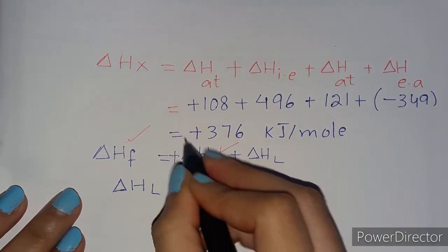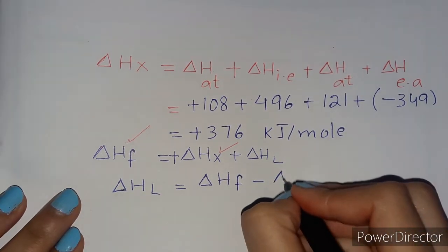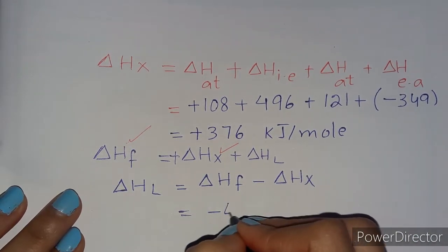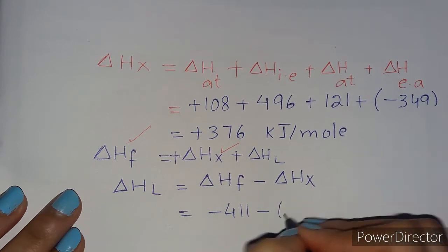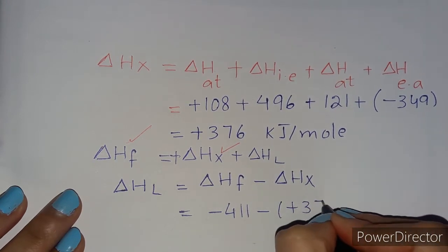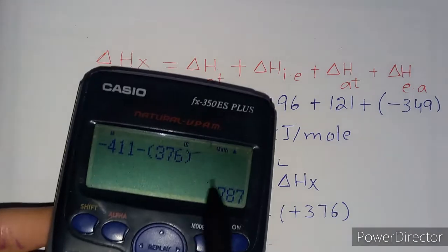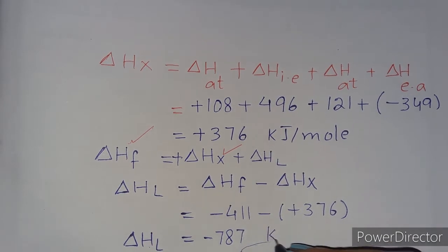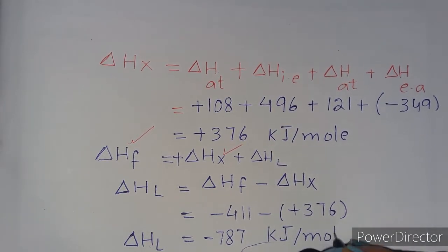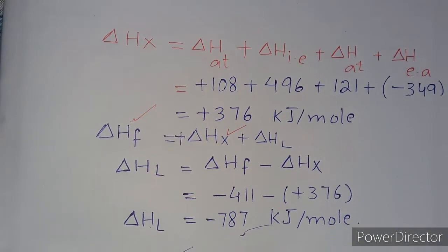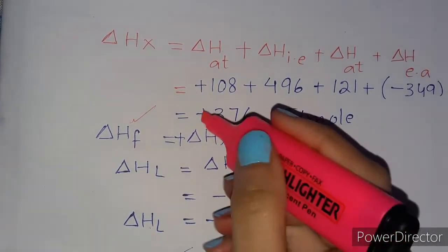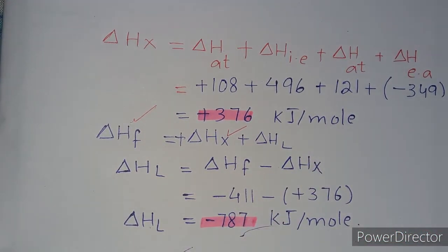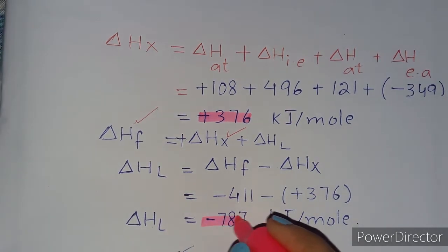Putting in the values: ΔHL = −411 − (+376) = −787 kJ/mol. So the lattice energy ΔHL for NaCl is minus 787 kJ/mol. We have now found the value of ΔHX and the lattice energy ΔHL.